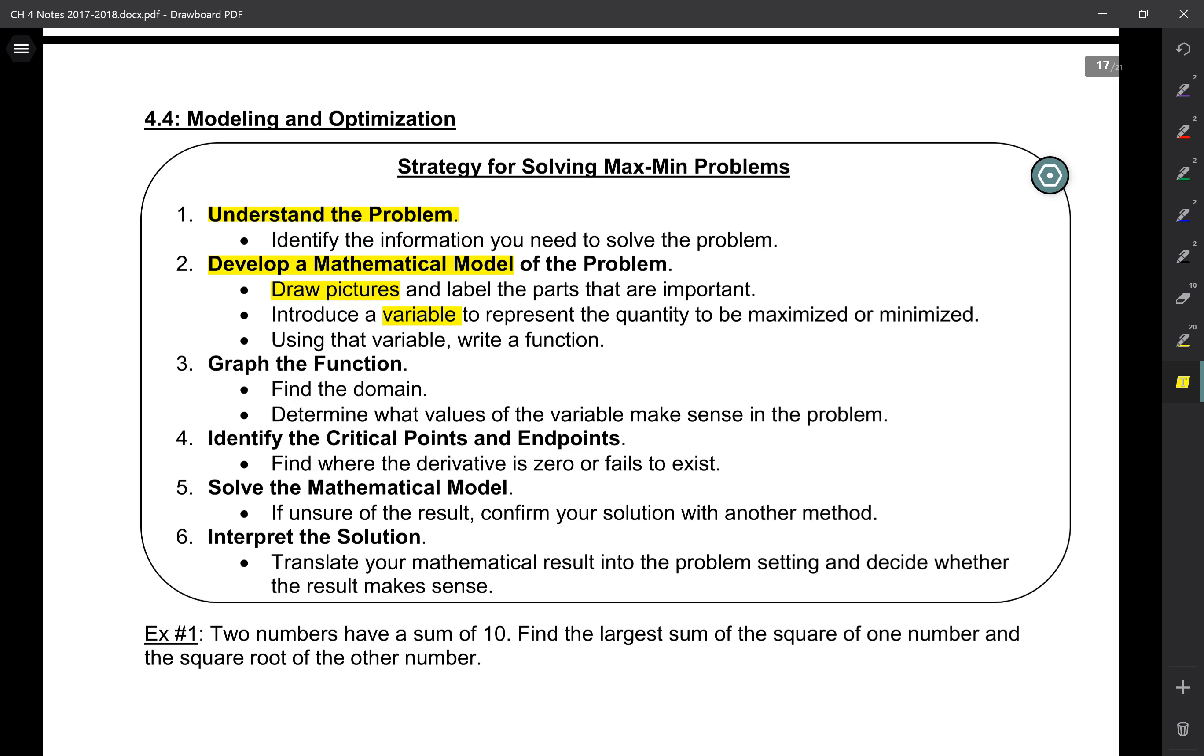And then using that variable, write a function. So, it's important that you work in one variable. So, for example, if you have height and width and volume, and you say V equals height times W squared, that's not going to work. Within the function, it should only be one variable. So, like if you have width and height, maybe you have to figure out a way to write the height in terms of W. You have to make one variable go away.